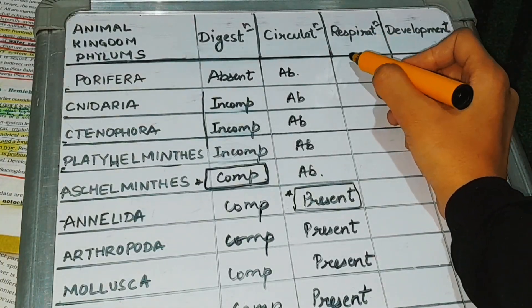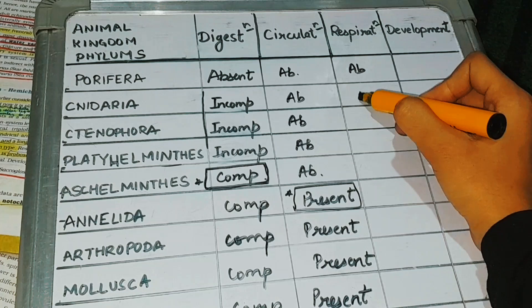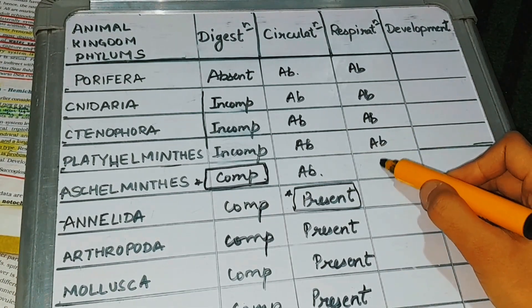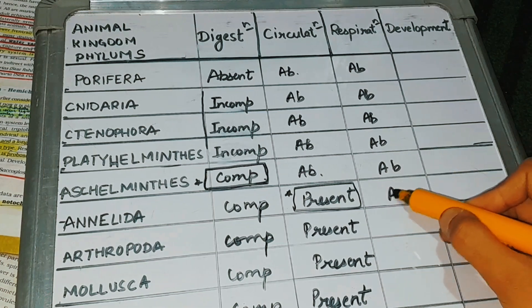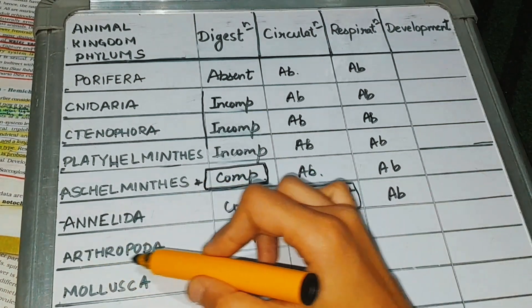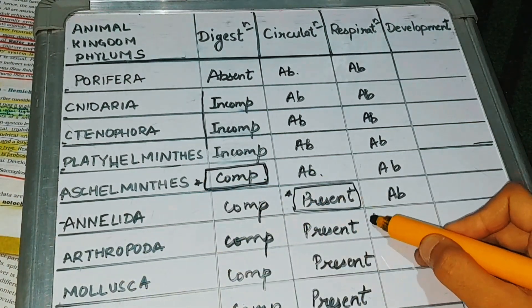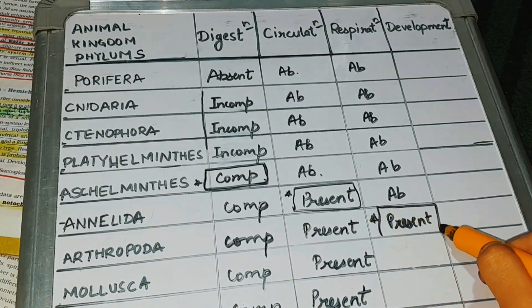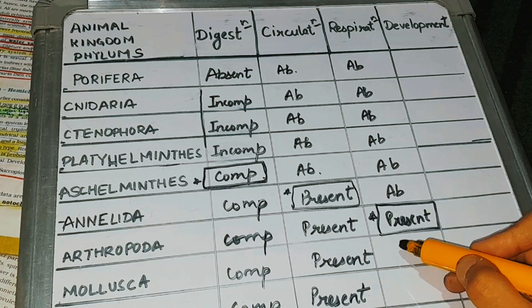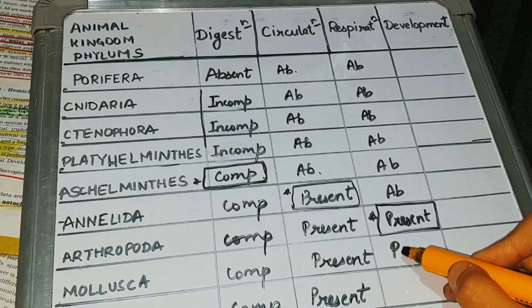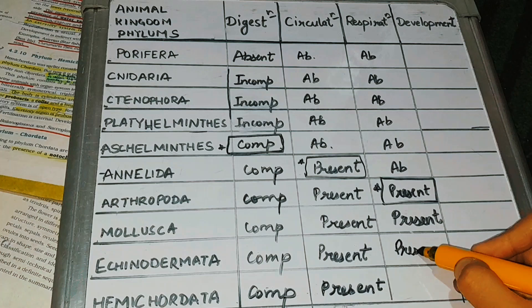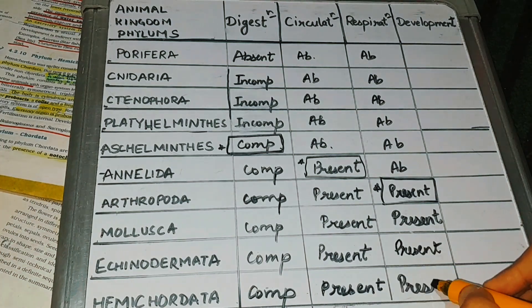Next topic is respiration. In Porifera, Nideria, Tenophora, Platyhelminthus, Ascalminthus, and Annelids also, respiration is going to be absent. Now it is going to start from the Arthropoda phylum — we will star-mark Arthropods. From Arthropods, all other phylums will have respiration present in them, like Mollusca, Echinodermata, and Hemicordata.